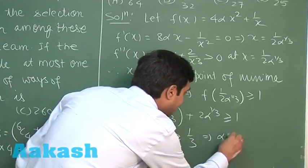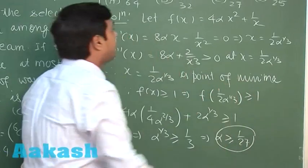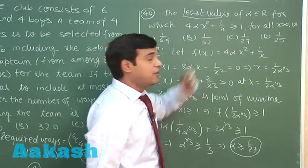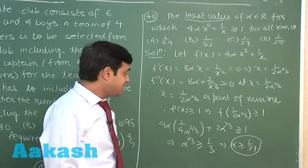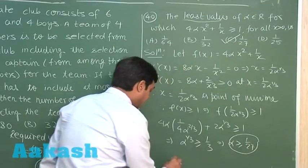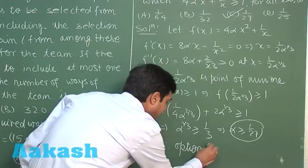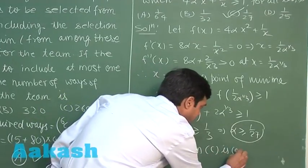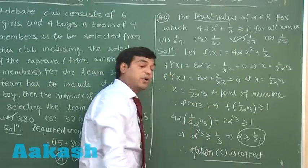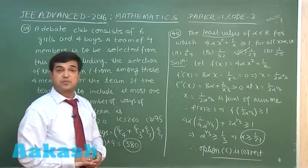The least value of alpha obtained is 1/27. Therefore option C is correct. This is how we deal with this kind of question.